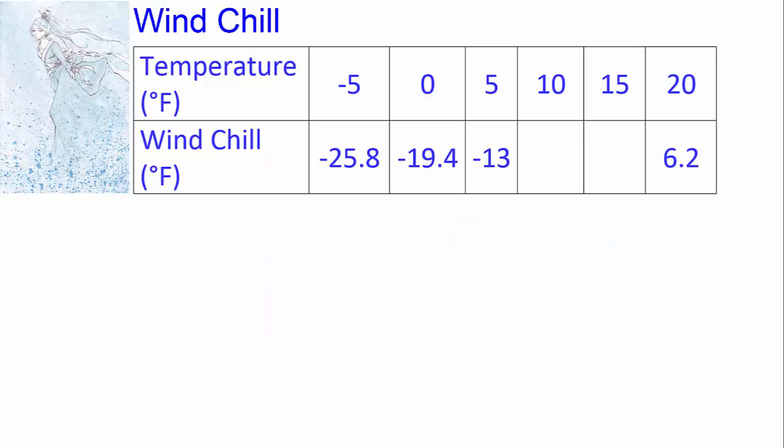On a cold, windy day, the temperature you feel is colder than the actual temperature because of the windchill factor. In the next example, we'll look at the relationship between actual temperatures and windchills by using an input-output table to study the rate of change. The table relates approximate windchills for different temperatures when the wind is 15 miles per hour. We call temperature the input variable because that's the variable that we choose, and the windchill is the output variable.